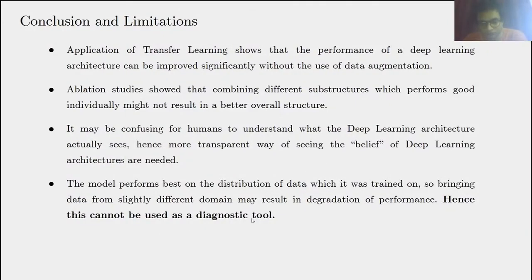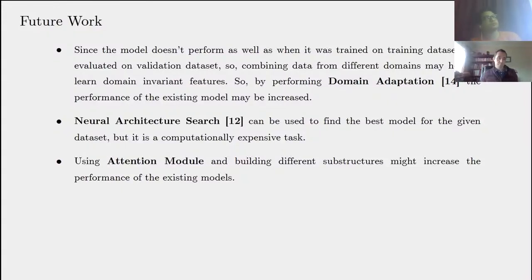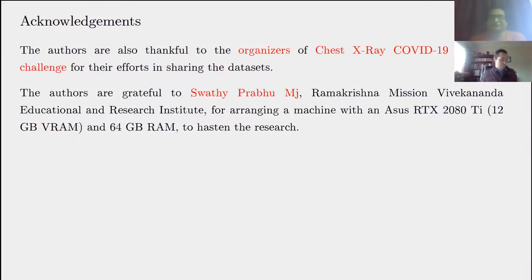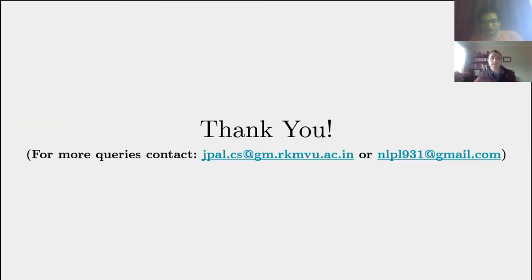For future work, domain adaptation could be employed — combining data from different domains to help the model learn domain-invariant features, potentially increasing performance of existing models. Neural architecture search could also find the best model for a given dataset, though it could be computationally expensive. Using attention models and building different substructures might also increase overall performance. We'd like to thank the organizers of the CXR COVID-19 challenge for sharing the dataset, and we are grateful to one of Jimuth's instructors for support on this study. Thank you very much.